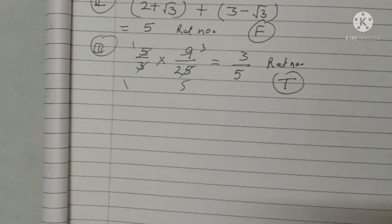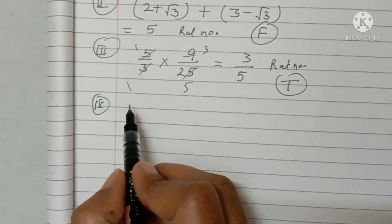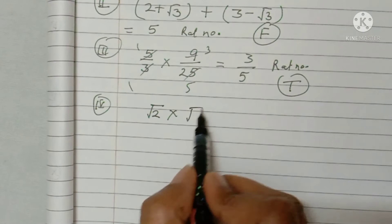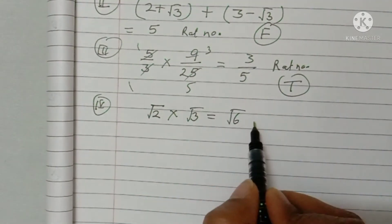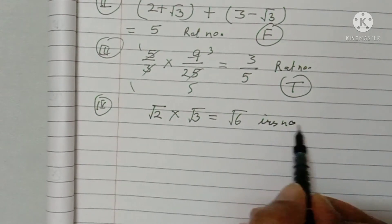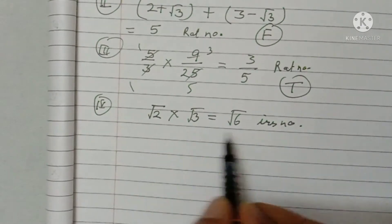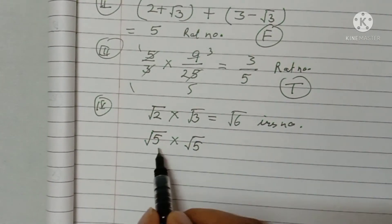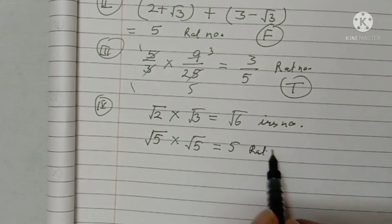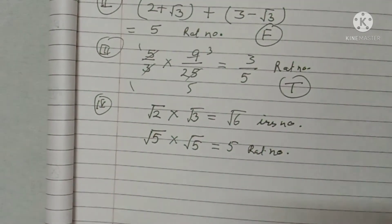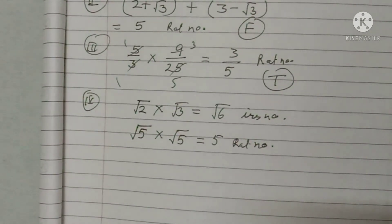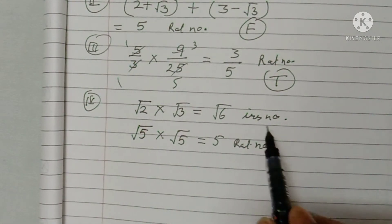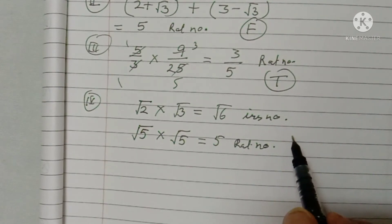Fourth: the product of two irrational numbers is irrational. Take √2 × √3 = √6, which is irrational. But also √5 × √5 = 5, which is rational. So the product of two irrational numbers may be rational or irrational — it is not always irrational. Therefore this statement is false.